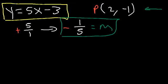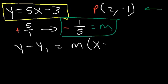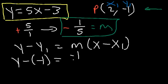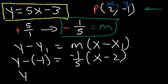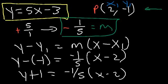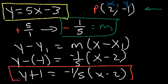Let's do it in point-slope form, then convert to slope-intercept form. Using y minus y1 equals m times x minus x1: x1 is 2, y1 is negative 1. So y minus negative 1 is equal to negative 1 over 5 times x minus 2. On the left we have y plus 1, and on the right negative 1 over 5 times x minus 2. This is the answer in point-slope form.